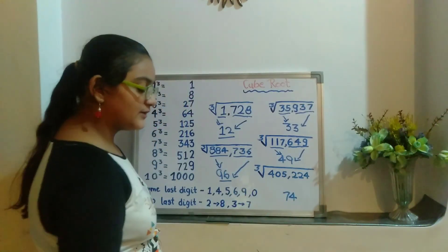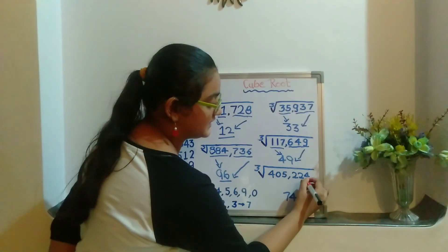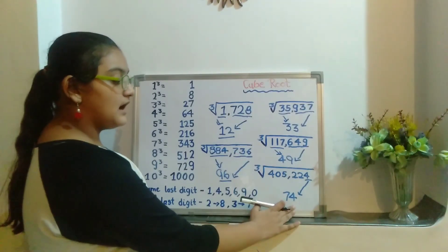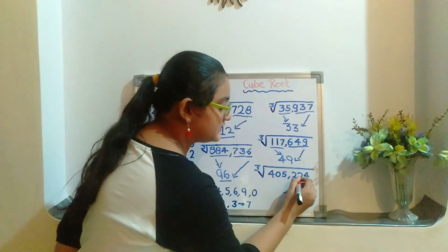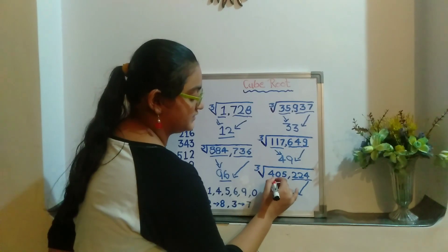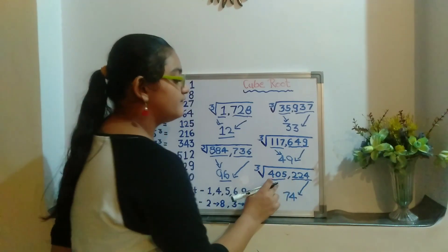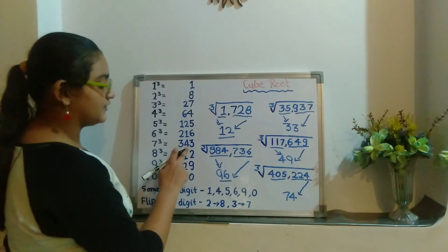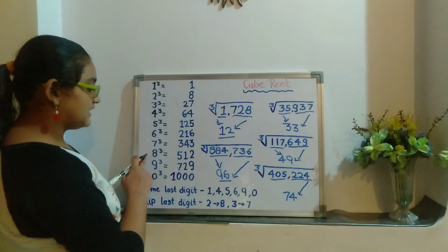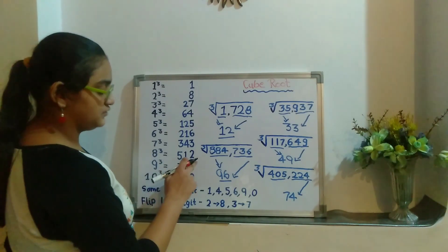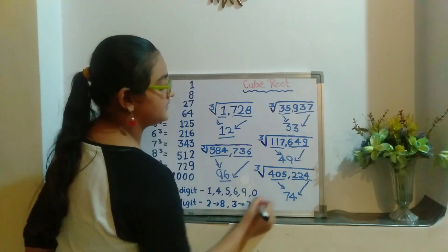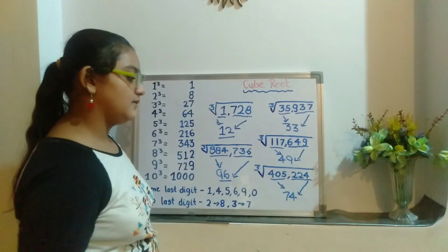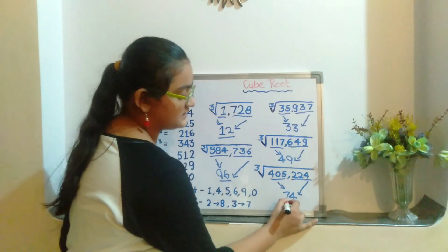Now in the last question, the last digit is 4. As we know 4 is the same digit, so we will write 4 here. Now we will ignore the last 3 digits and concentrate on the leftover digit which is 405. 405 is greater than 7's cube which is 343 and is smaller than the cube of 8 which is 512. So we will write 7 here, as we have to write the smaller cube than 405. So the answer for this is 74.